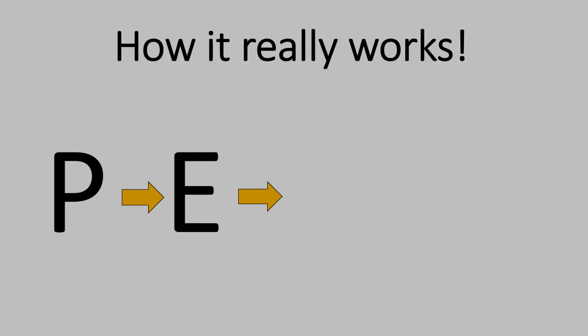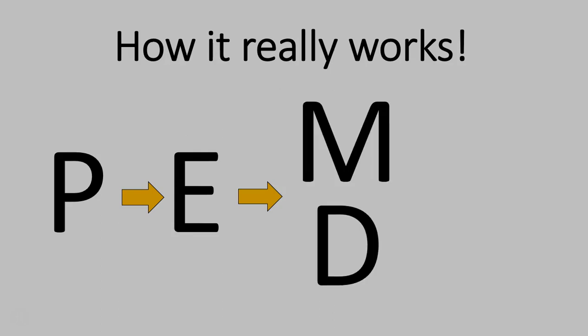But then we do our multiplication and division in one step, starting at the left, moving to the right. In other words, if there's division on the left of multiplication, you do the division first. If there's multiplication on the left, you do the multiplication first. Whichever comes left to right, multiplication, division, you start from the left to the right.